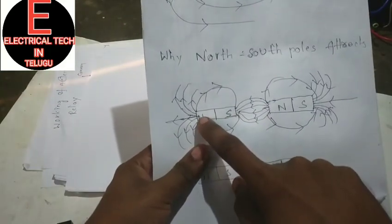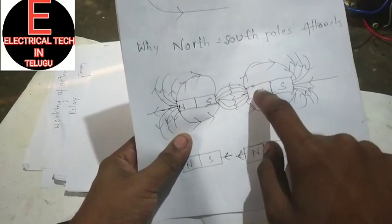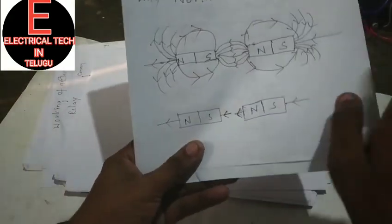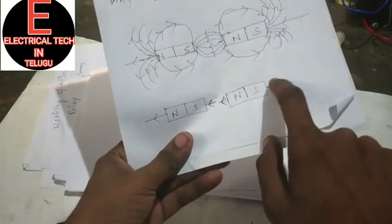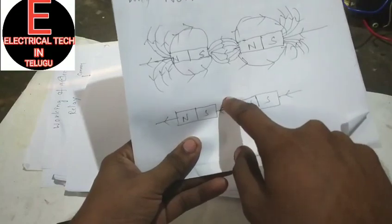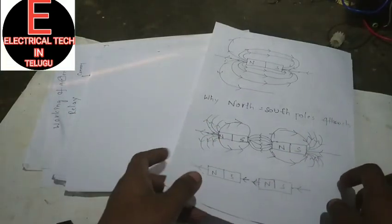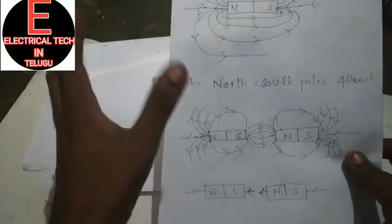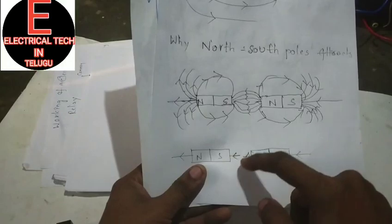You can use the magnetic lines to understand this. The direction is north pole to south pole. The magnetic lines of direction flow will attract the north pole and south pole.